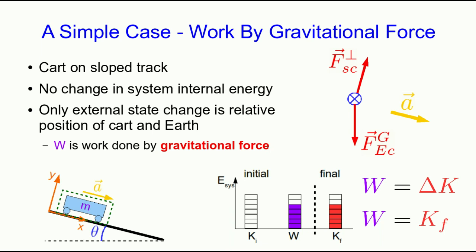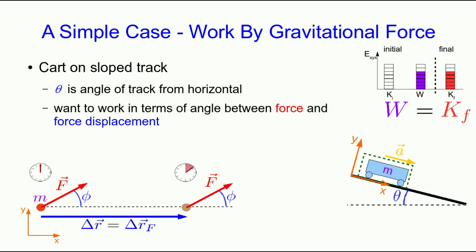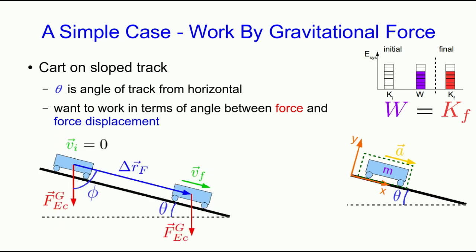Normally when we talk about things on slopes we use the angle from the horizontal, but that's not the angle we want here. We want the angle defined as the angle between the force and the force displacement vector. In particular, we want the angle between the gravitational force — the only force doing work — and the force displacement vector. That is the angle phi indicated in the diagram.